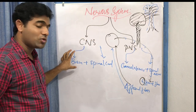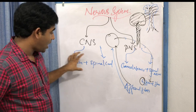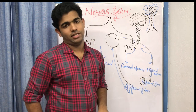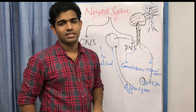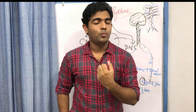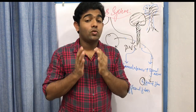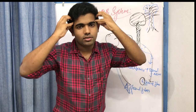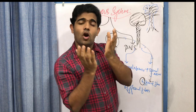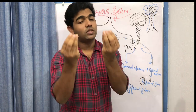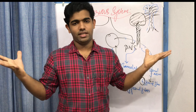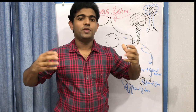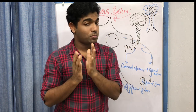The central nervous system includes the brain and spinal cord, and we will study each in detail. The peripheral nervous system includes cranial nerves and spinal nerves. Did you know the brain weighs about 1.5 kg — 1500 grams? But you cannot feel that weight because it is floating inside the cerebrospinal fluid, which makes it feel as light as 50 grams.